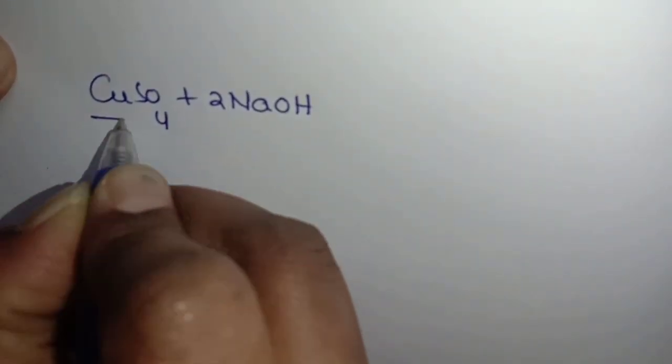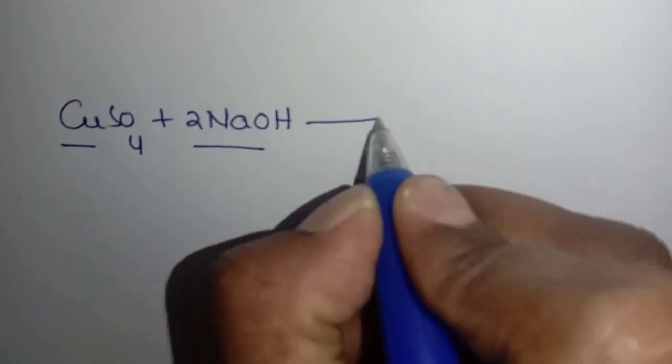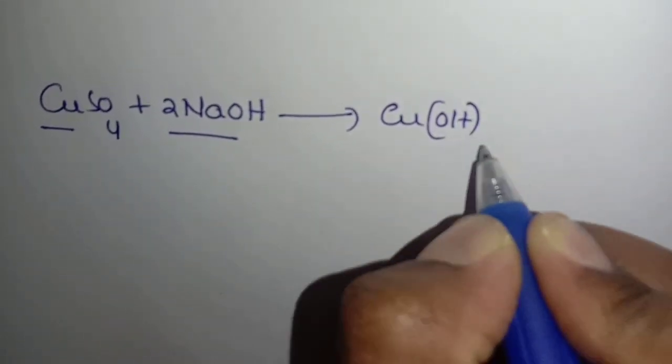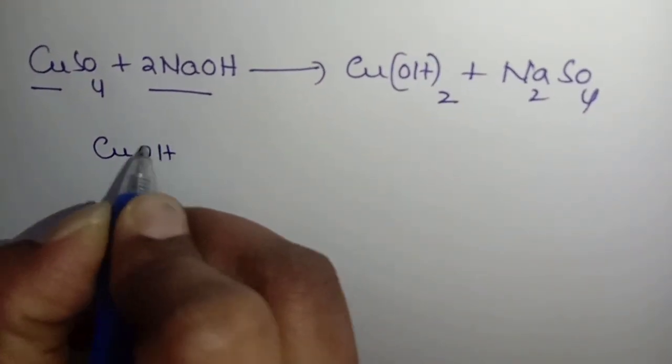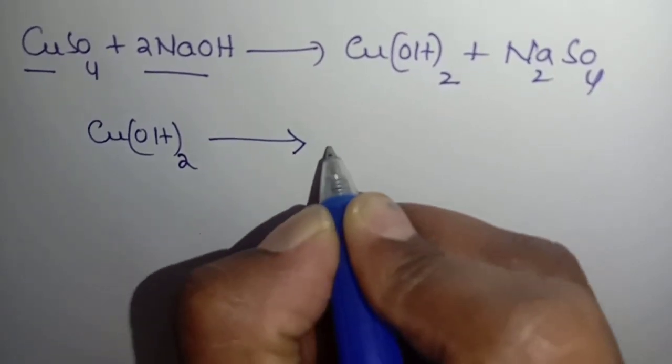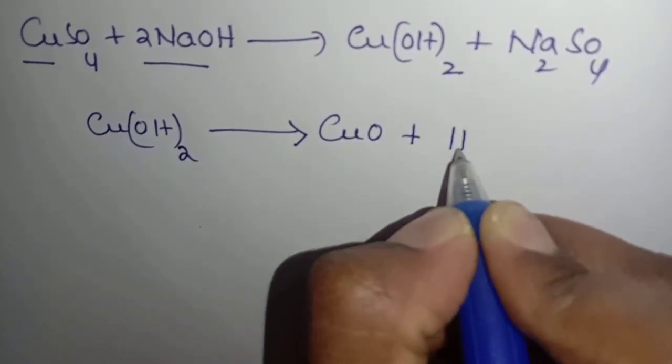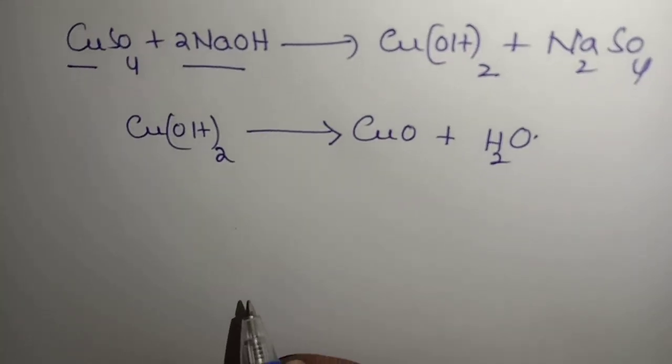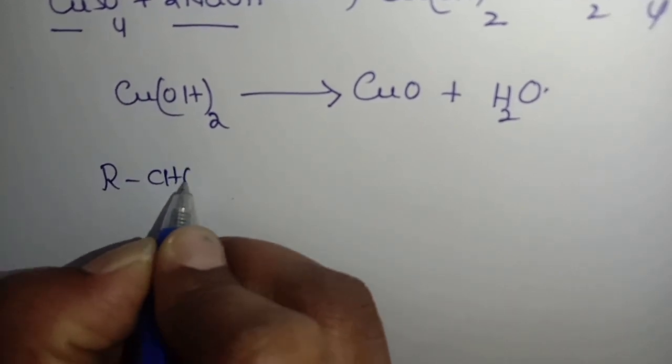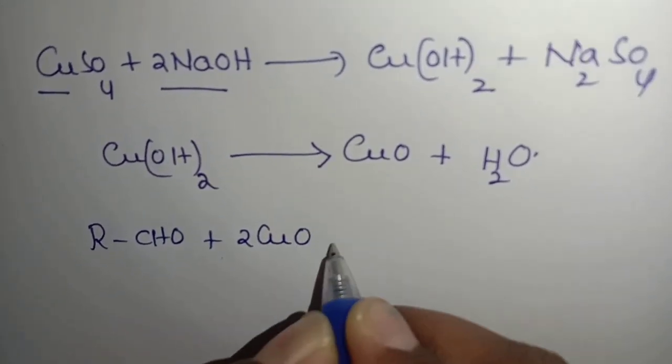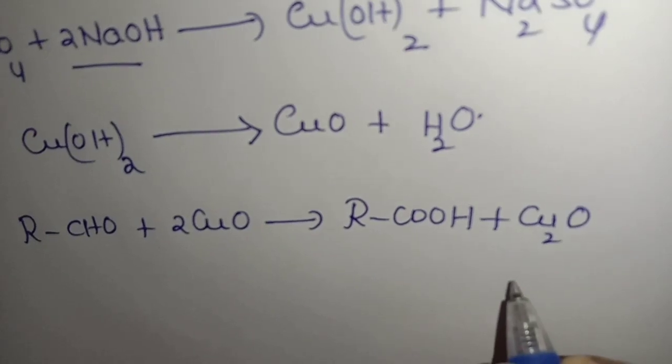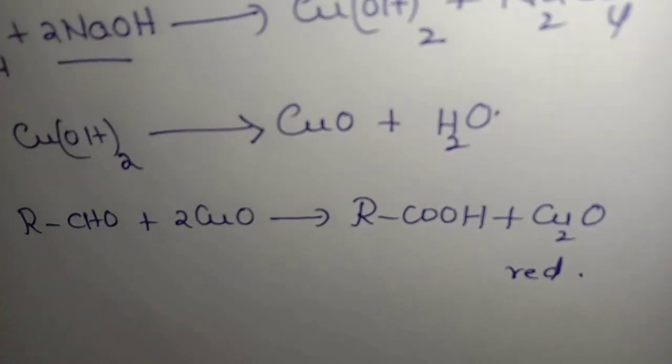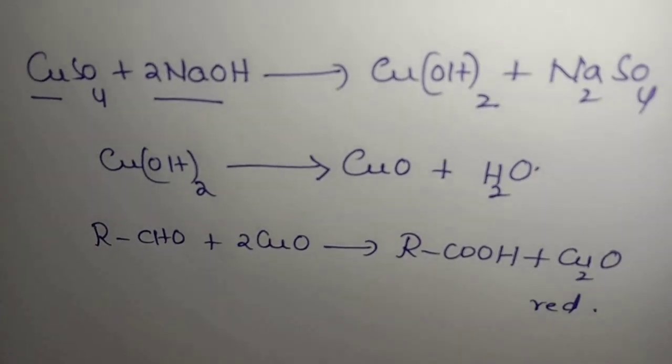Copper sulfate plus 2NaOH, this is in Fehling's A, this is in Fehling's B, gives Cu(OH)2 plus Na2SO4, copper hydroxide. This copper hydroxide dissociates into CuO plus H2O. This is copper oxide in which Cu+2 ions have blue color. When aldehyde is treated with this, we get RCOOH plus Cu2O. This is cuprous oxide which is in red color. If you want you can note down these reactions also.